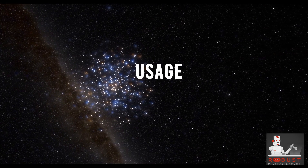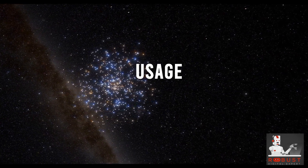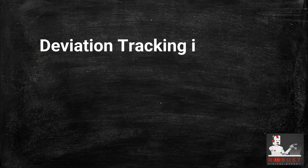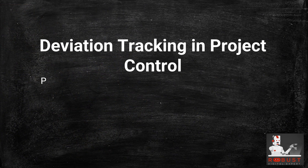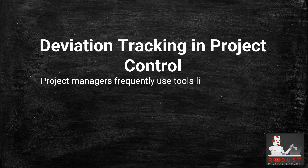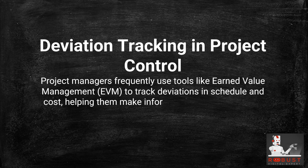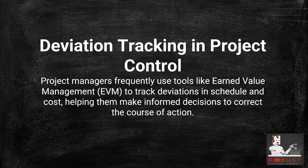Usage — Deviation Tracking in Project Control: Project managers frequently use tools like Earned Value Management (EVM) to track deviations in schedule and cost, helping them make informed decisions to correct the course of action.